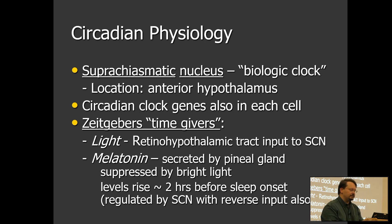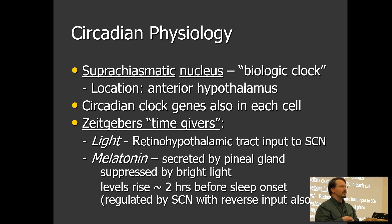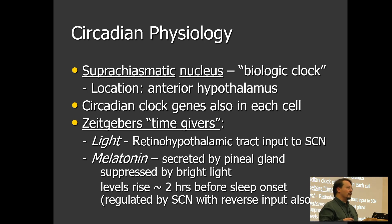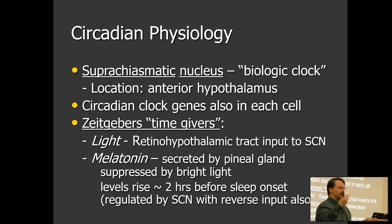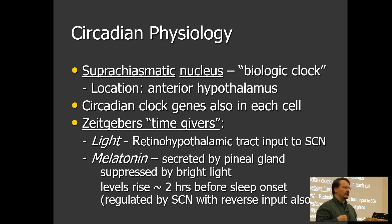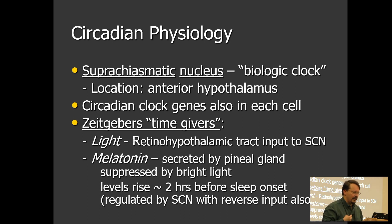Before artificial lighting was introduced, individuals slept more — around 9 to 10 hours on average. After we started manipulating the environment and introducing light, that number drove down to 7 or 8 hours. So light's effect can be quite dramatic.